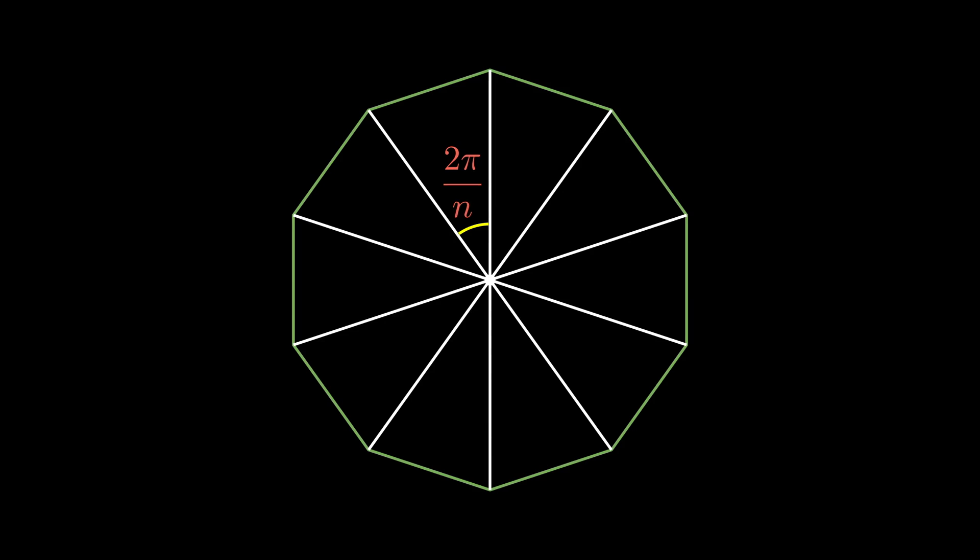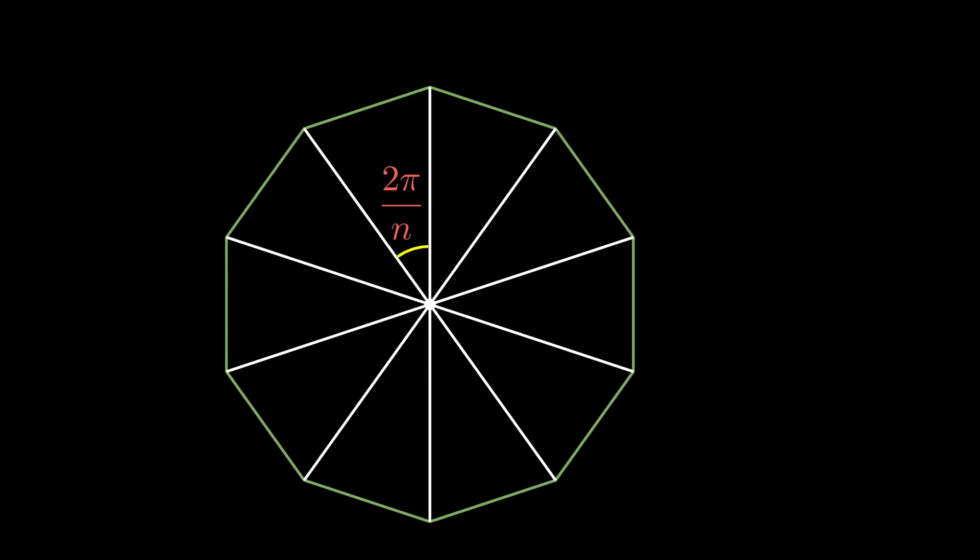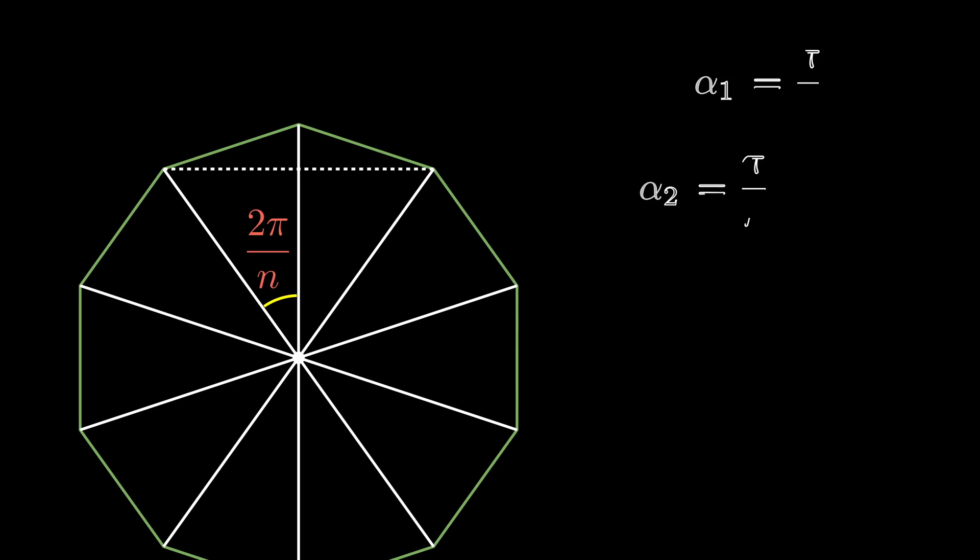Our polygon also has a rotational symmetry. Take the center and consider these wedges. Rotating by one of them returns the same polygon. So, this rotation is exactly how much the next alpha angle in our sequence gains.